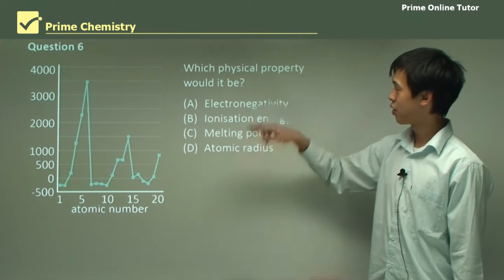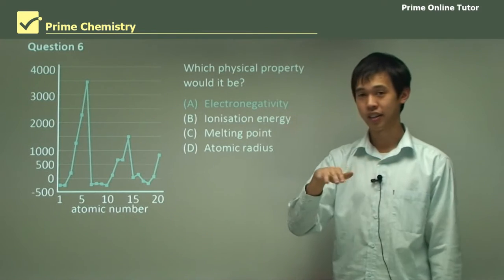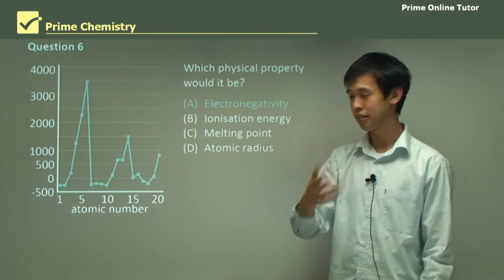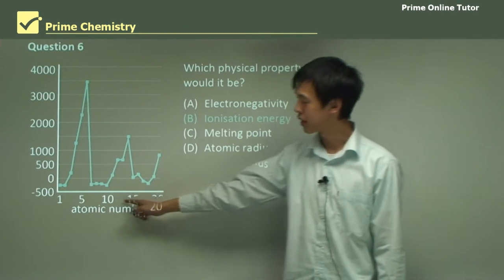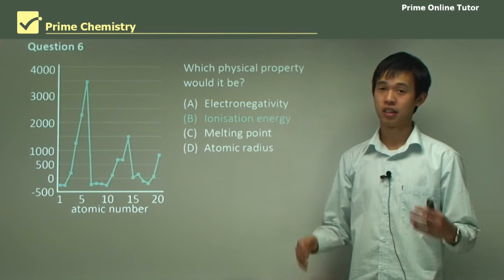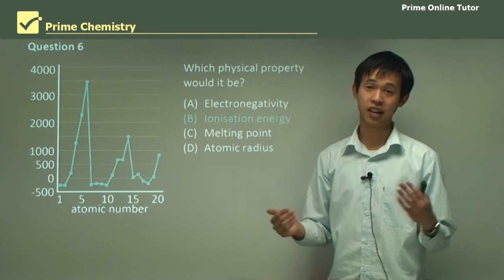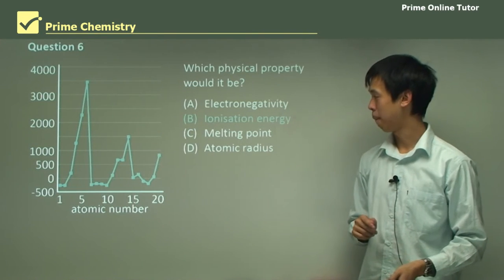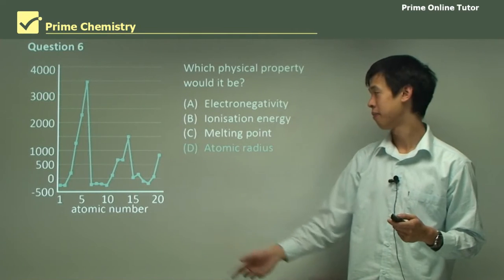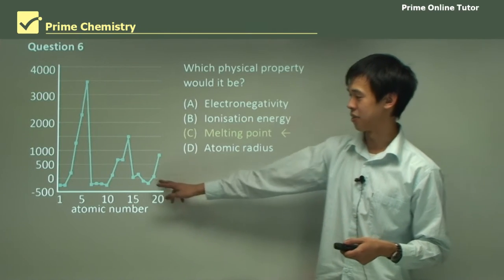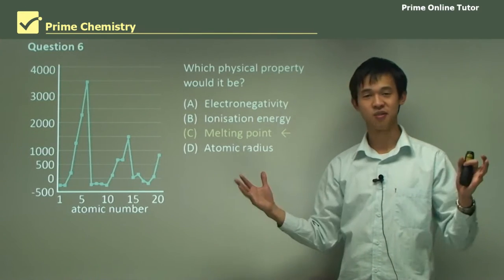Looking at this graph — which physical property would it be? Option A, electronegativity — well no, because as we go higher towards more non-metals, towards atomic number 10, we would see an increase in electronegativity so it's probably not A. Ionization energy — no again, because ionization energy actually increases across the period consistently. Atomic radius decreases as you go across a period, so we don't see that trend here. So we're left with C, which is melting point. You can even tell by the units — 4000 degrees — which matches a melting point scale.